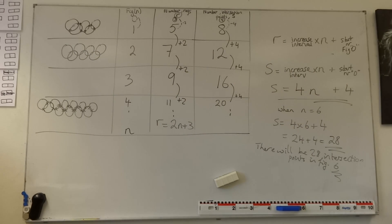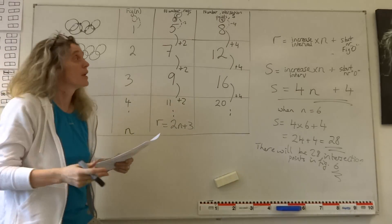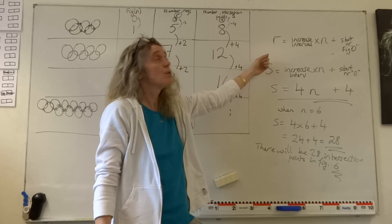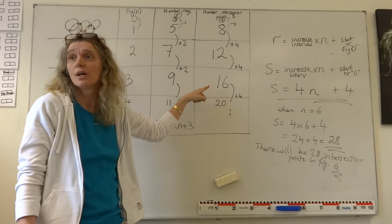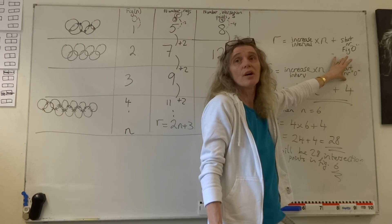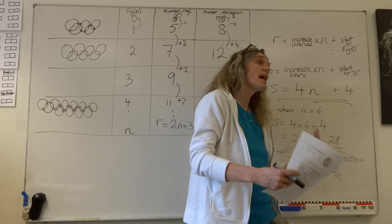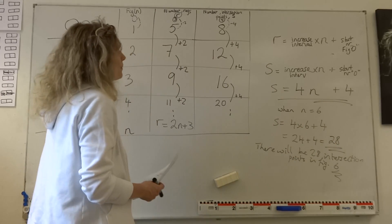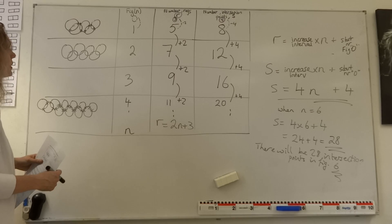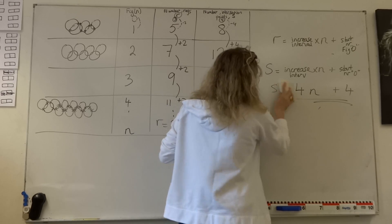Then it asks: which formula can you use for intersection points, and explain where you got it from? This is the formula to use whenever there is a constant increase between the numbers: the increase interval times the figure number, plus whatever the number would have been at figure number 0 — the starting number. If you explain it that way, you would get all the available points, including the A points. That's an easy way to explain it.